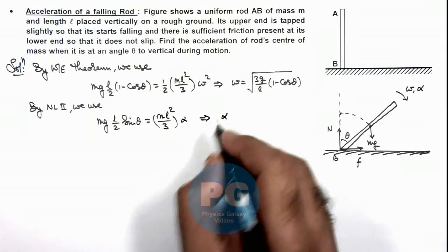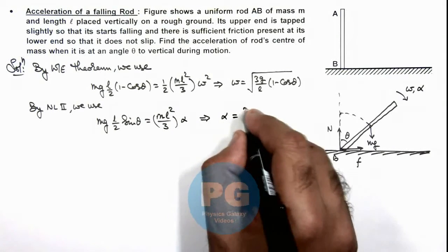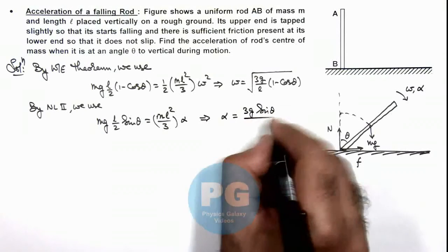Which gives us the angular acceleration of the rod, that is (3g sin θ)/(2l).